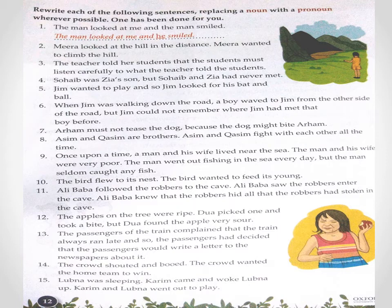Number two: 'Mera looked at the hill in the distance. Mera wanted to climb the hill.' اس میں 'Mera' کی جگہ 'she' آ جائے گا اور 'hill' کی جگہ 'it' آ جائے گا۔